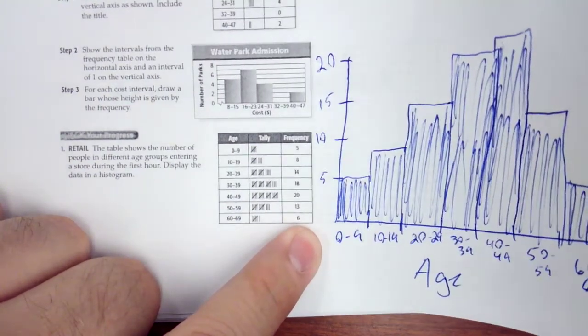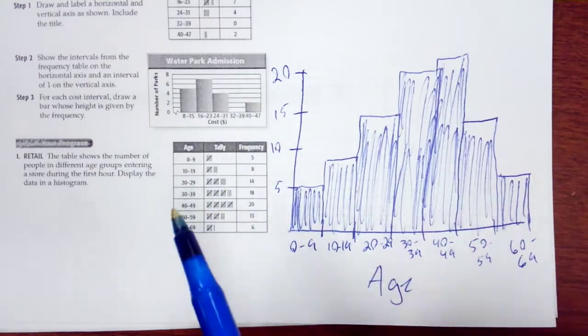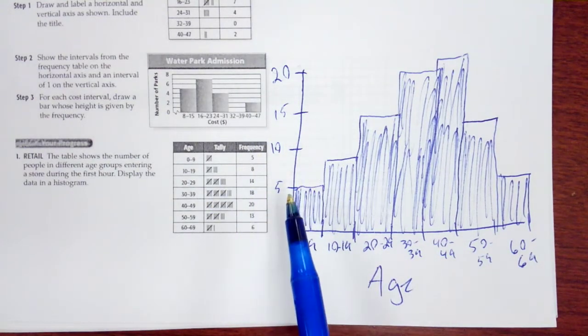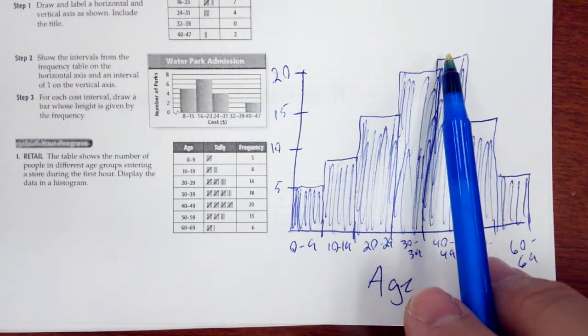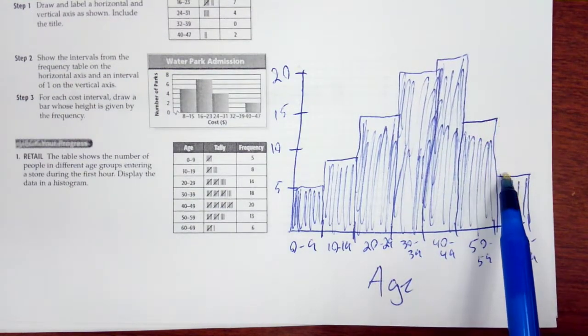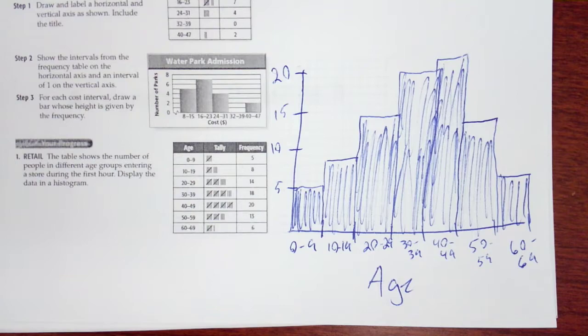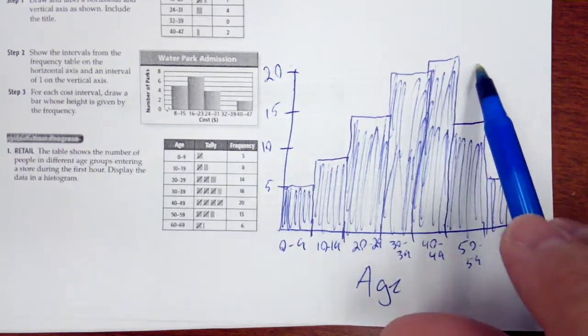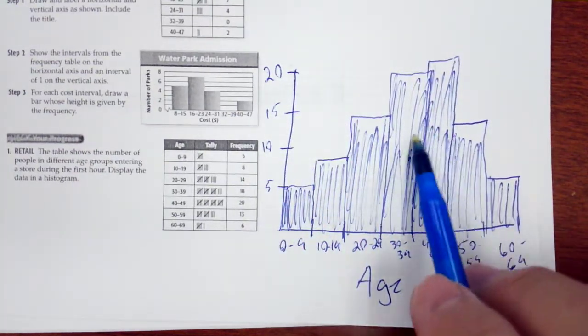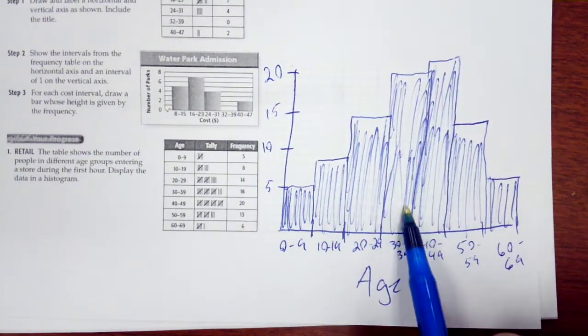Okay, so I have a histogram here. Okay, it's not very pretty, but it works. Okay, so 5, 8, 14, 18, 20, 13, and 6. So we're going to find that our median and our mean are somewhere in here. It's a pretty even distribution. Okay, so our mean and median are going to be in these two categories.